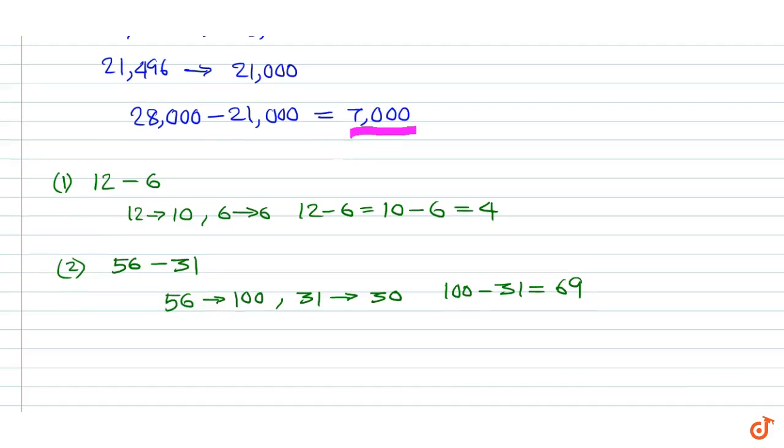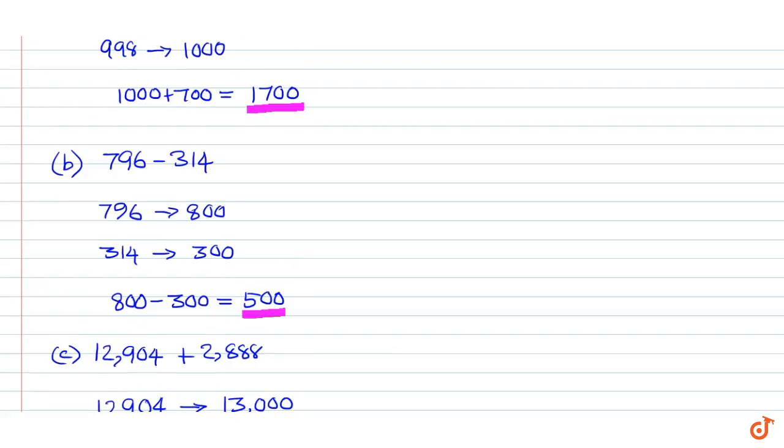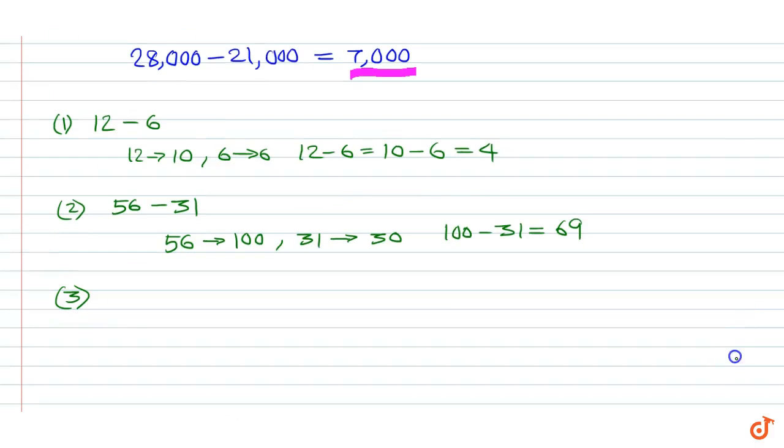Example 3: 78 plus 42. 78 rounds up to 80, 42 rounds up to 40, so 80 plus 40 equal to 120.